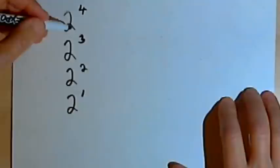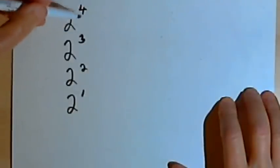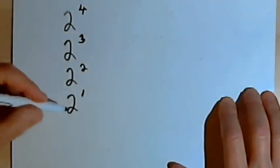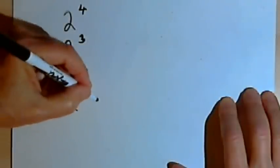I've got the base 2, and I'm gonna have 2 to the fourth, and 2 to the third, and 2 squared, and 2 to the first. And let's fill in what these numbers equal.